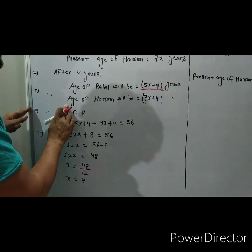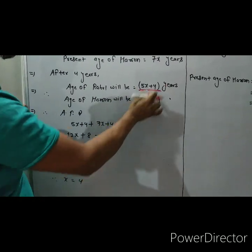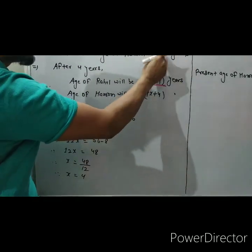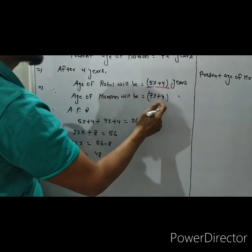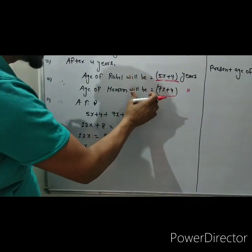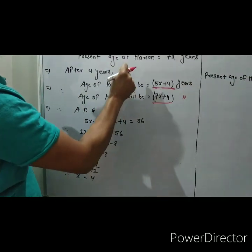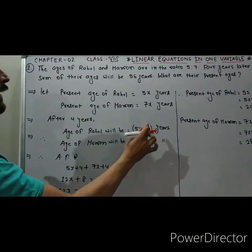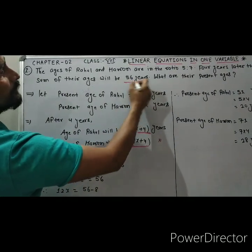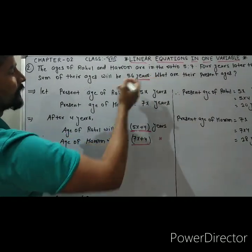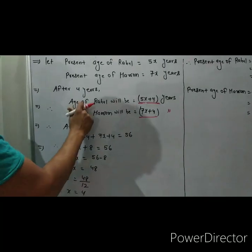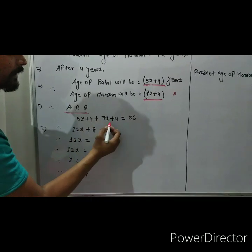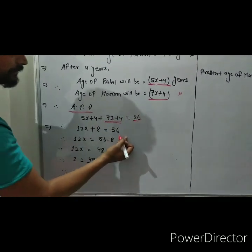Now what is the question asking here? After 4 years, the sum of ages of Rahul and Haroon will be 56 years. According to the question we can write: 5x plus 4 plus 7x plus 4 is equal to 56.